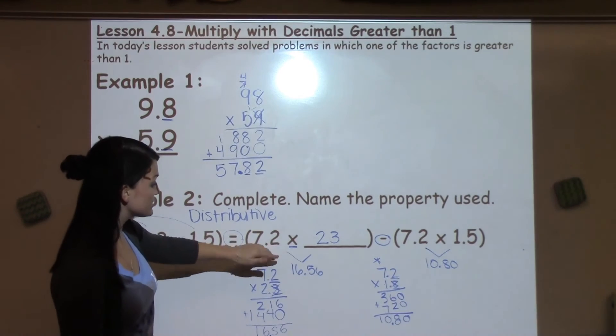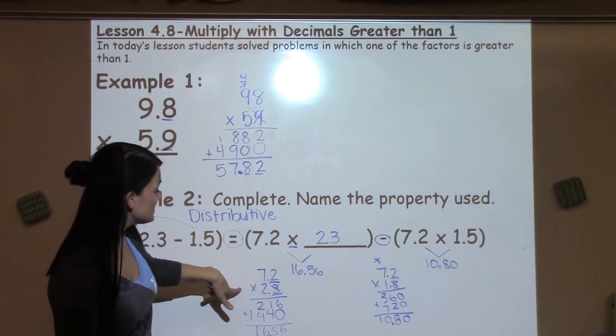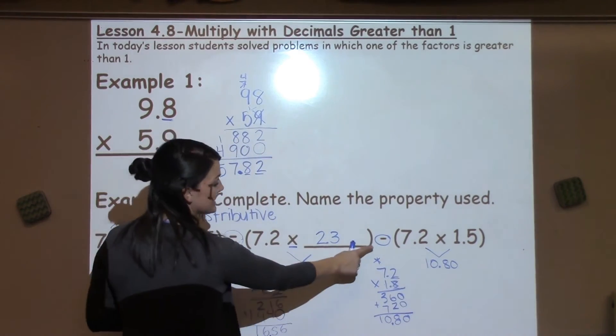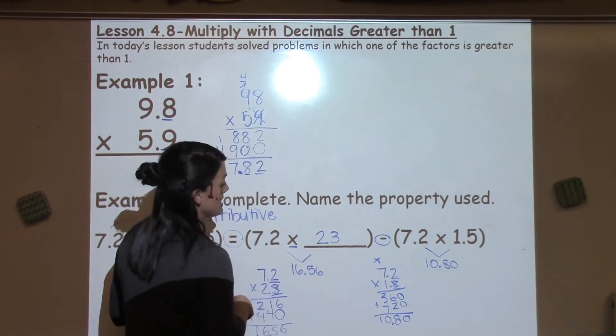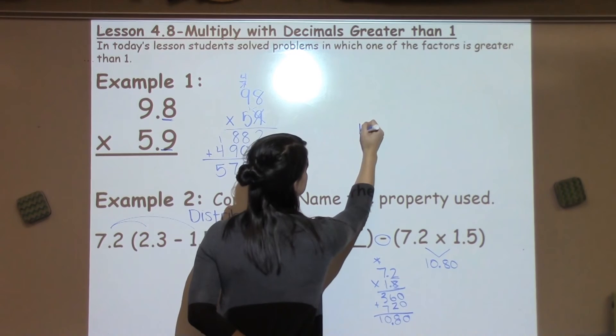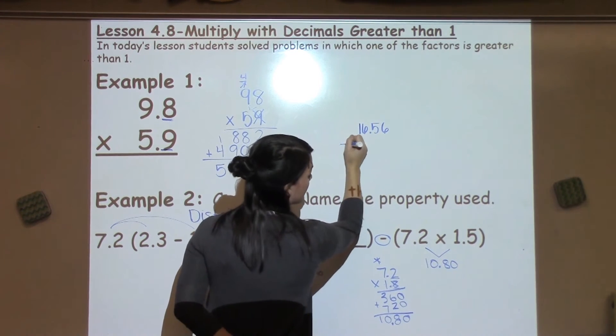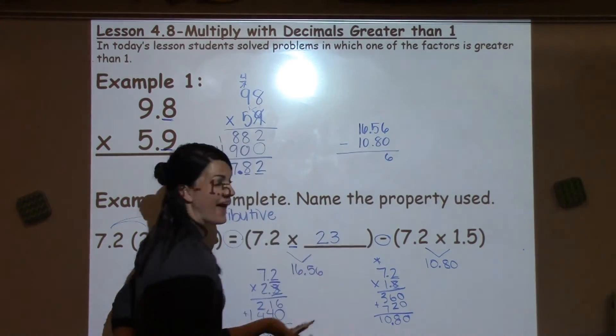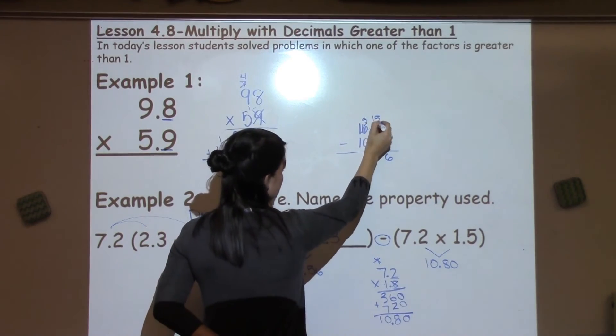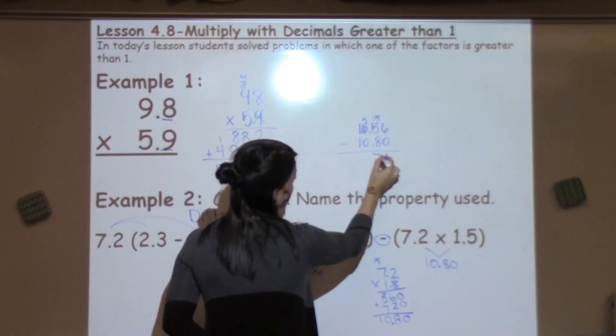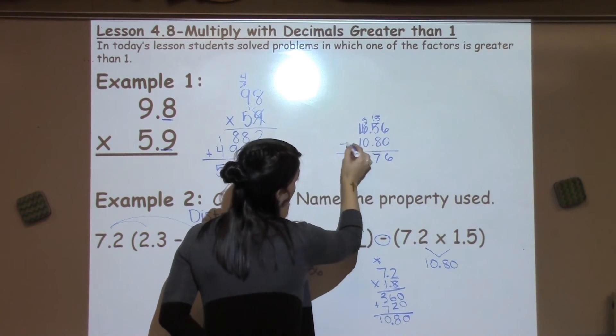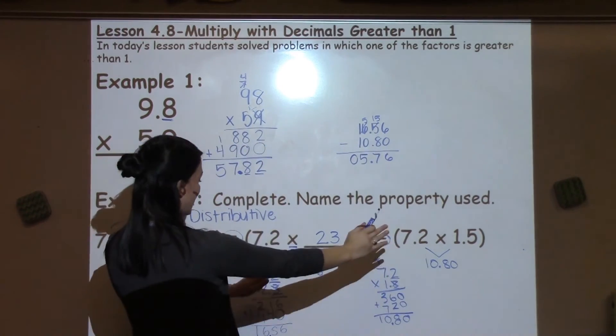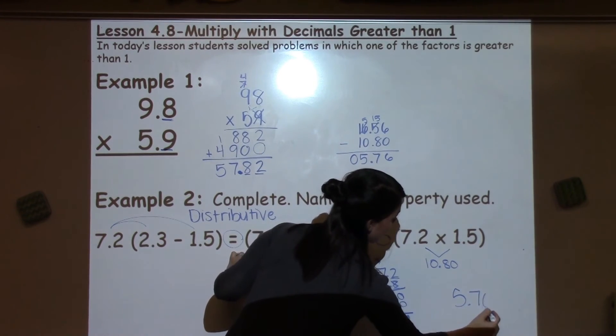Now that I have both of the answers for the multiplication problems, 7.2 times 2.3 and 7.2 times 1.5, the last thing I need to do is subtract them to find my answer. So I'm going to take 16.56 minus 10.80. 6 minus 0 is 6. 5 minus 8 I cannot do, so I need to borrow. 15 minus 8 is 7. I bring down my decimal point. 5 minus 0 is 5 and 1 minus 1 is 0 for a final answer of 5.76.